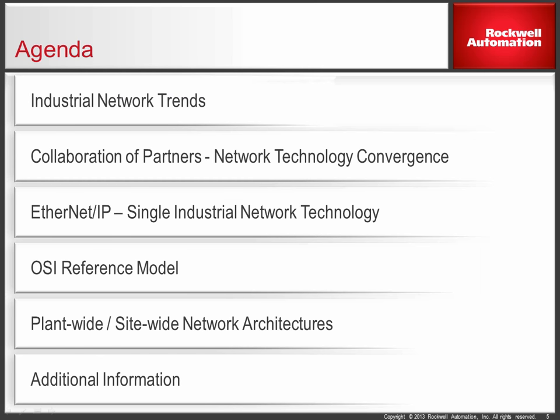For this particular topic, I'll start off with covering industrial network trends and what's going on today. I'll briefly cover network technology convergence and the collaboration of partners, position EtherNet/IP as the single industrial network technology for this multi-discipline control and information platform, cover the OSI reference model and how EtherNet/IP applies to it, cover network architecture examples for both plant-wide and site-wide, and finish up by referencing additional information.